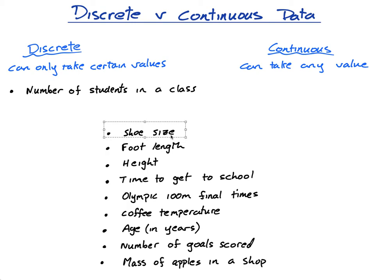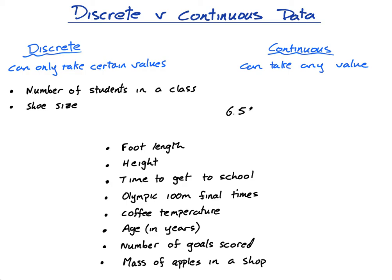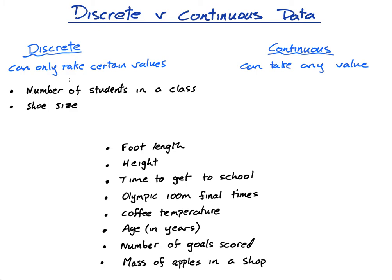Shoe size is also discrete. A common misconception is that discrete means whole numbers or integers. Shoe size would be 6, 7, 8, or 9 — but it doesn't have to be integers. You could have shoe sizes of 6.5, 7, 7.5, 8, 8.5. Even though there are 0.5 values, it's still discrete because it's jumping — it goes from 6.5 to 7, 7 to 7.5. Discrete does not mean whole numbers; it just means certain values.